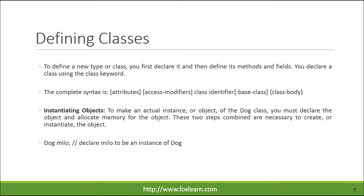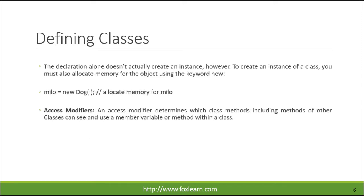Instantiating objects: to make an actual instance, or object, of the dog class, you must declare the object and allocate memory for the object. These two steps combined are necessary to create, or instantiate, the object. The declaration alone doesn't actually create an instance, however. To create an instance of a class, you must also allocate memory for the object using the keyword new.